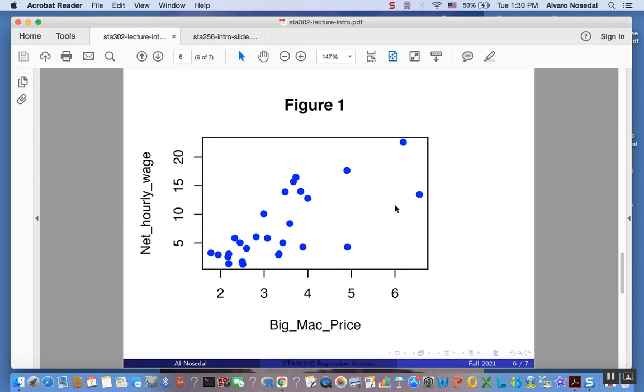c. If a model can be constructed to determine the net hourly wage of a worker anywhere around the world by the price of a Big Mac, what is the predicted net hourly wage of a worker in a country if the price of a Big Mac is $3?